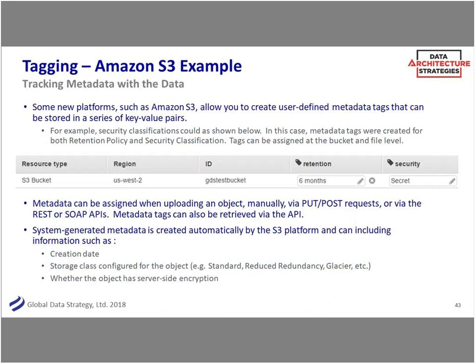What's nice to see is that even platforms like Amazon S3 — not a relational database — have this idea of metadata tags that can actually travel with the data. You can assign a security tag on a bucket or file, and as you move it, it'll stay with it. You assign that metadata with put and post requests, as well as system-generated metadata: storage class, when it was created, what encryption levels. That's the who, what, where, why, when of metadata. Most platforms get this.